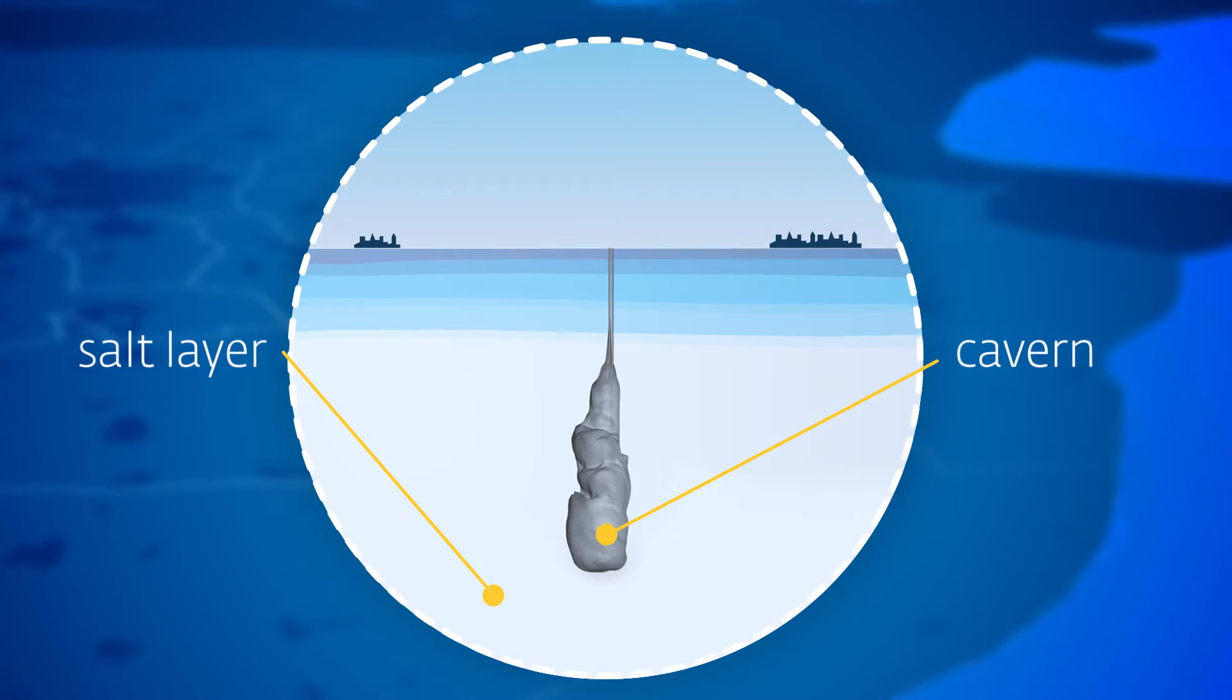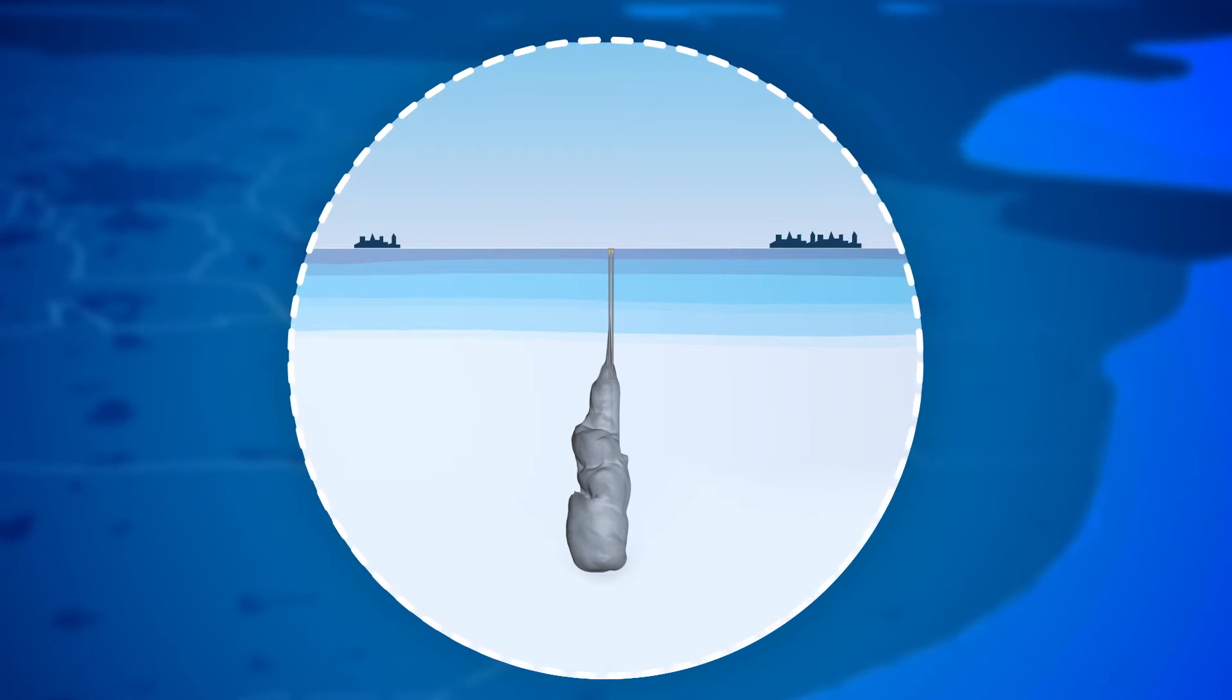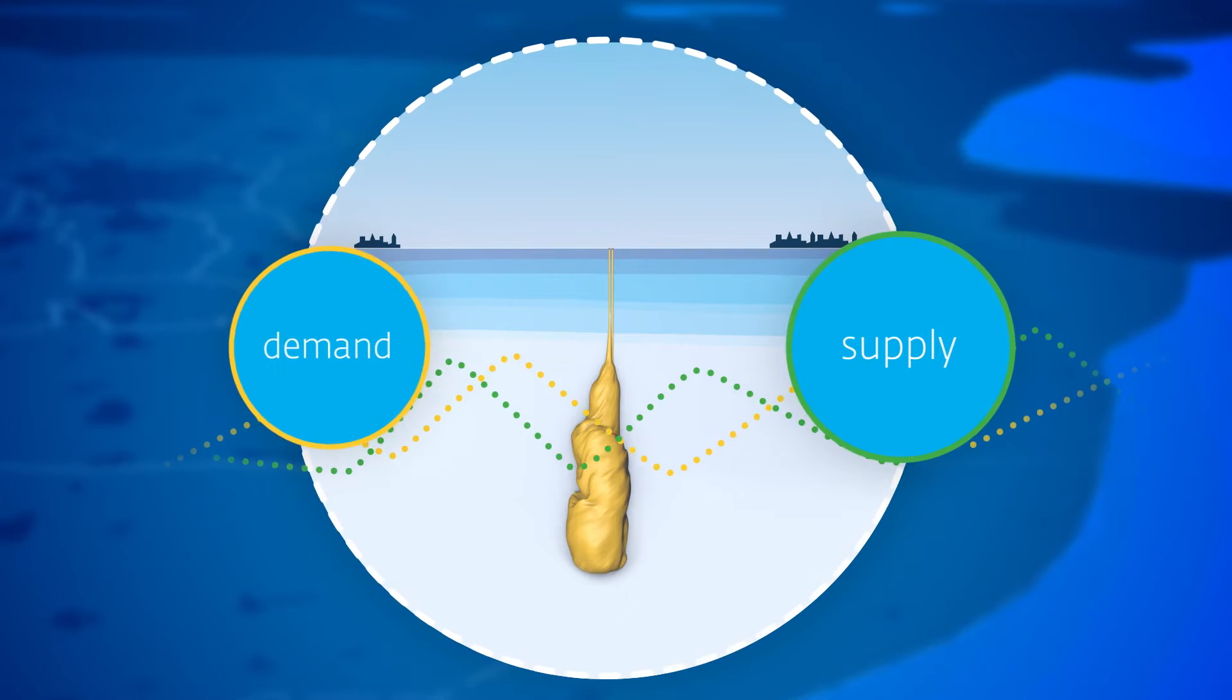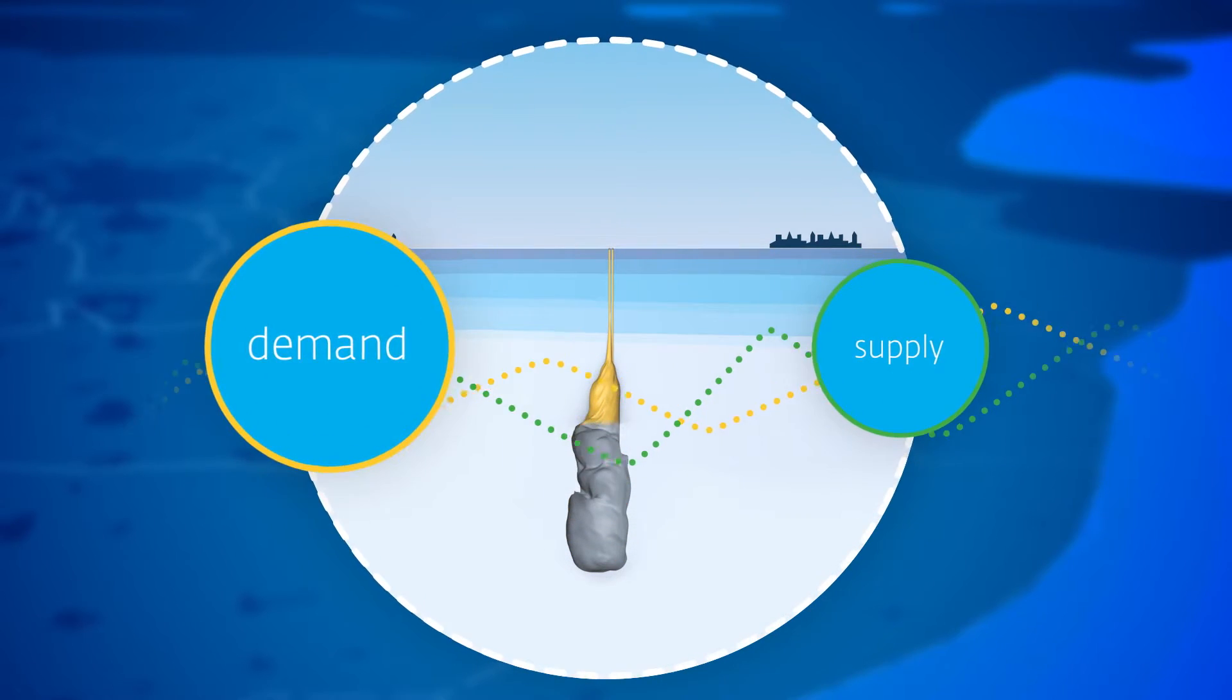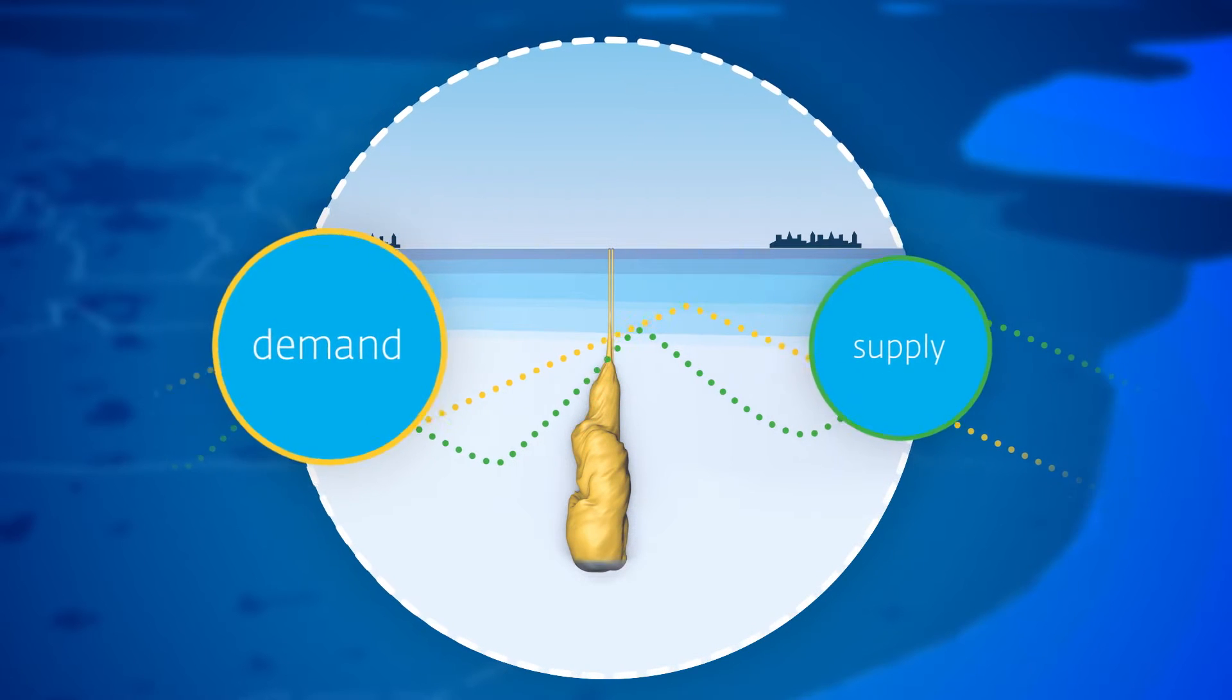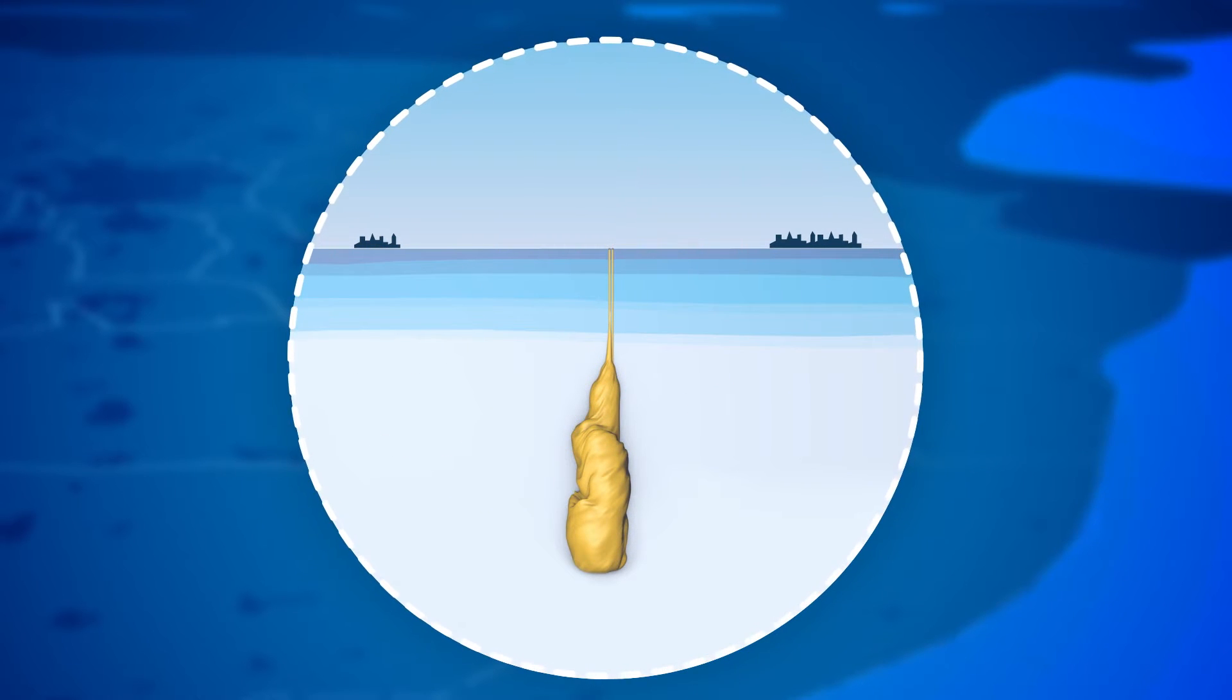Natural gas is stored in these caverns to accommodate temporary imbalances in supply and demand, thereby ensuring that sufficient gas is available during periods of peak demand. For example, when we get up in the morning and have a shower and turn on the heating, or when we cook our evening meal.